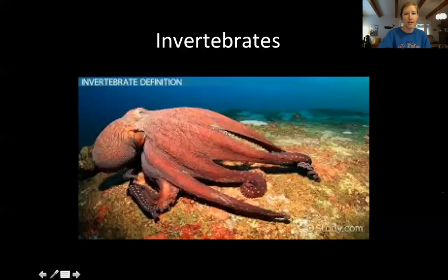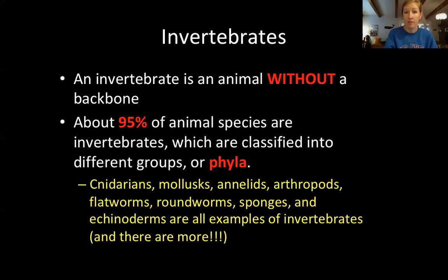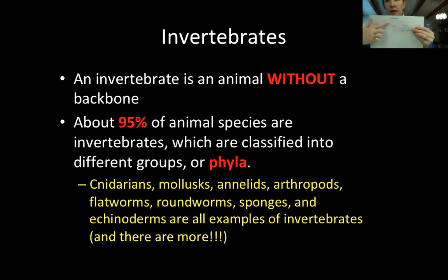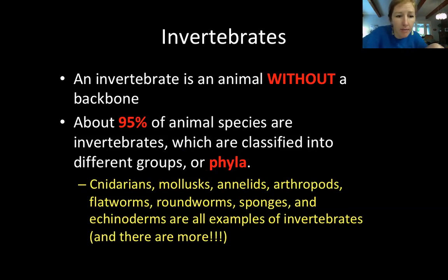Okay, so invertebrates — and that right there is an octopus. An invertebrate is an animal without a backbone. About 95% of animal species are invertebrates, and only about 5% — some say about 3% — are vertebrate animals. These animal species are classified into different groups, or phyla. There are arthropods, annelids, mollusks, cnidarians, and a few more: flatworms, roundworms, sponges, and echinoderms. Those are all examples of invertebrates.